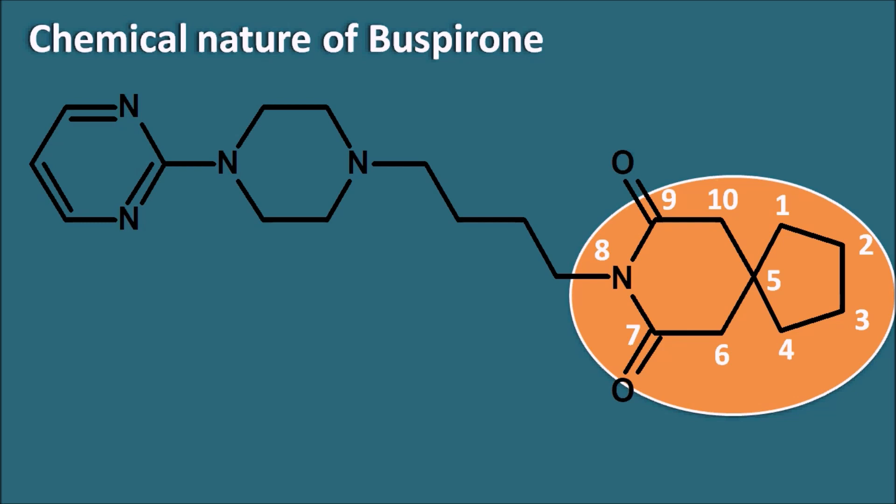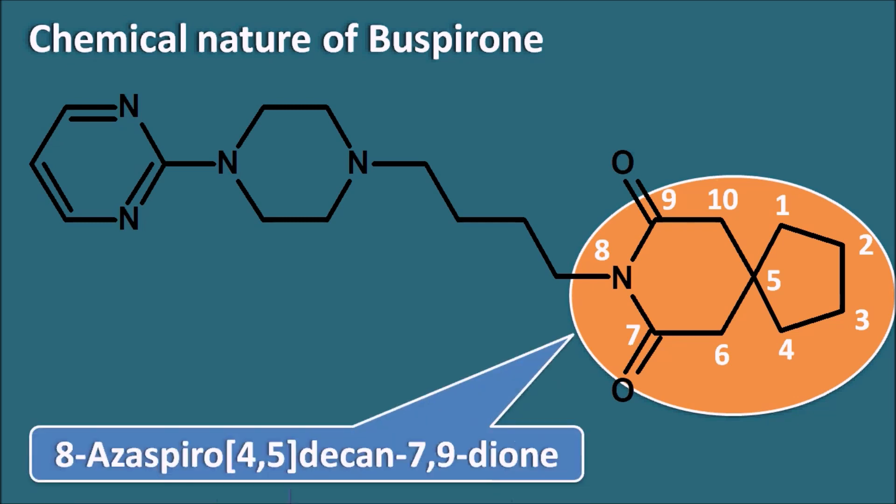It is named as a decane. And we can observe that nitrogen is present at the 8th position, and two ketones are present at the 7th and 9th positions. So the name of this ring system is 8-Aza-Spiro-4,5-Decane-7,9-Dione. So totally it is having 10 atoms with nitrogen at the 8th position, and it is a spiro compound by fusion of a 5-membered ring system with a 6-membered ring system, which is indicated by 4, 5 — excluding the spiro atom.